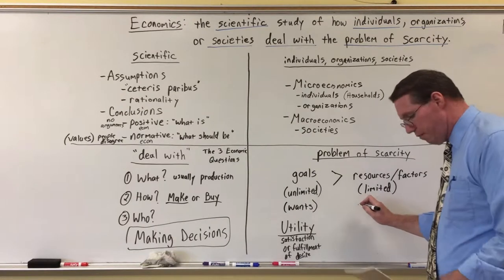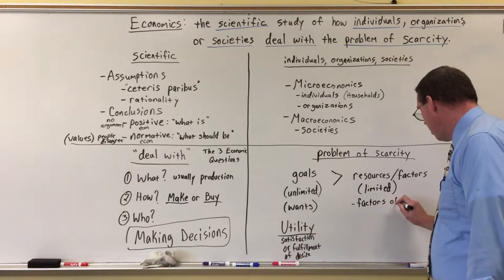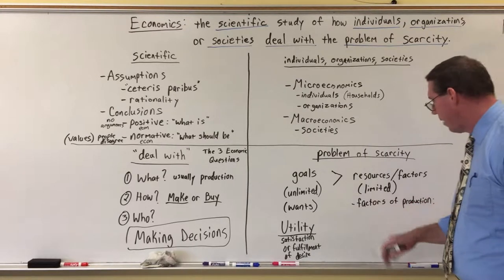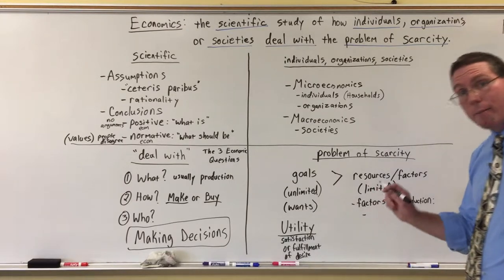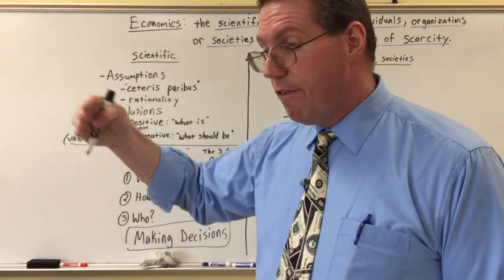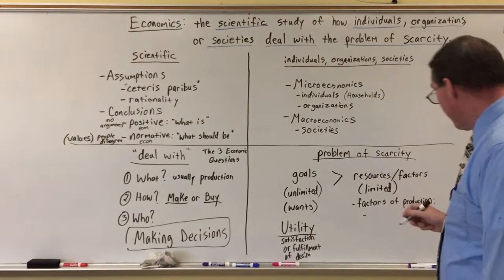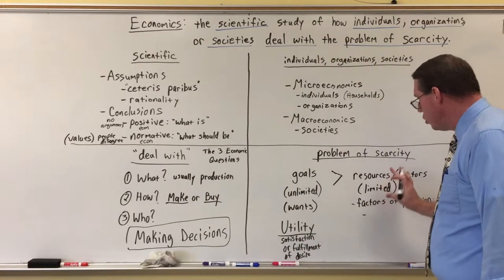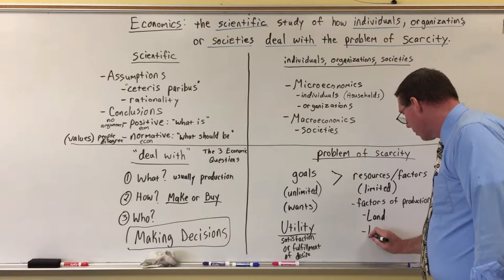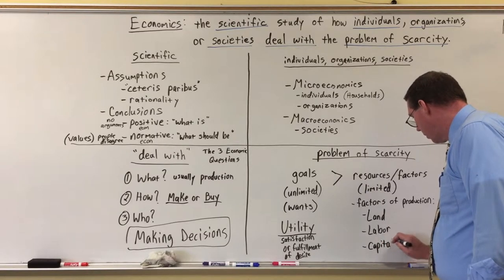The factors of production — you're going to want to write this down. There are three main factors of production in economics. Economics has been around for a while and so these are really simple words, but they mean something very specific. The three factors of production — what we use to satisfy our utility — are land, labor, and capital.